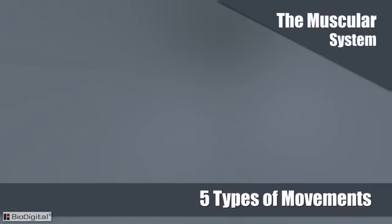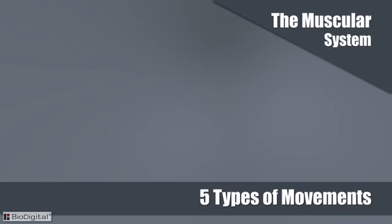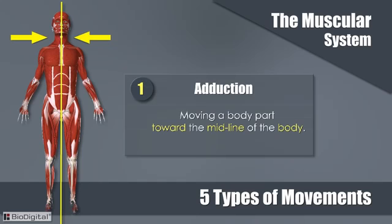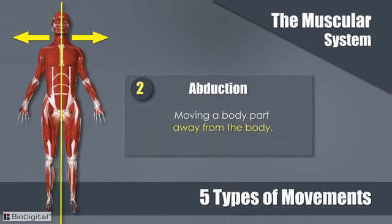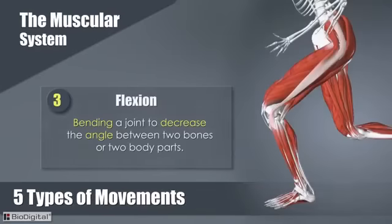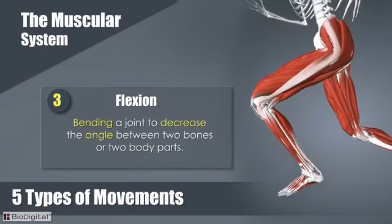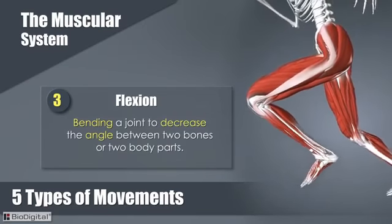Now let's look at the five types of muscle movements. Number one: adduction. Adduction is the moving of a body part toward the midline of the body. Abduction is moving a body part away from the body.